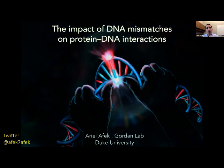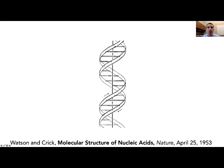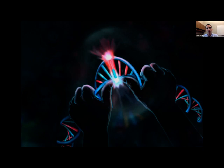When I think about the three-dimensional structure of DNA, this is the picture I typically have in mind: the beautiful canonical double helix. However, our own DNA in the cellular environment is constantly going through chemical changes from damaging agents and from replication errors. These damages often distort the DNA and can change the way DNA interacts with transcription factors.